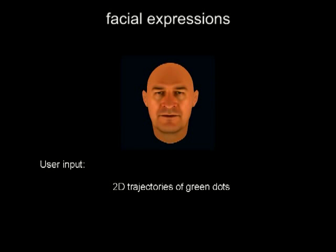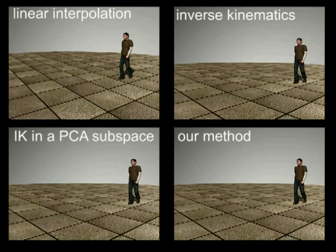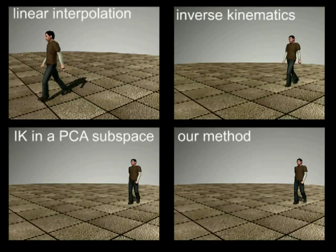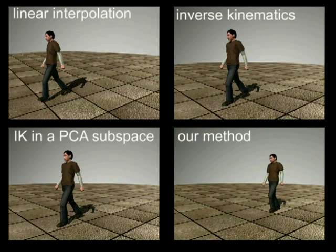We evaluate the importance of our statistical model by dropping off terms from the model. Given the user-defined constraints, we show a comparison between our method and linear interpolation with the same set of keyframes, result using inverse kinematics, result after applying inverse kinematics to the PCA subspace, and our result.